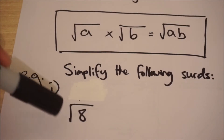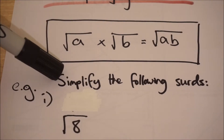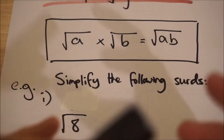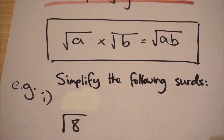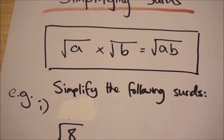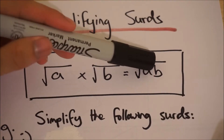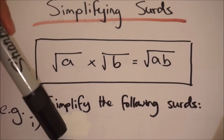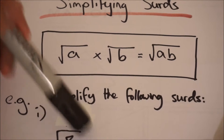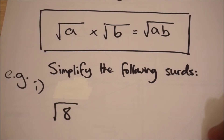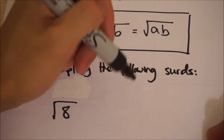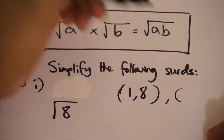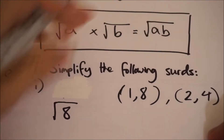Here's our first example: the square root of 8. When they ask us to simplify surds, they want us to reduce the number inside the square root to a number that's as small as possible. We're going to need to use factors. The square root of ab can be broken up into the square root of a multiplied by the square root of b. So what are the factors of 8? We have 1 and 8, and also 2 and 4.